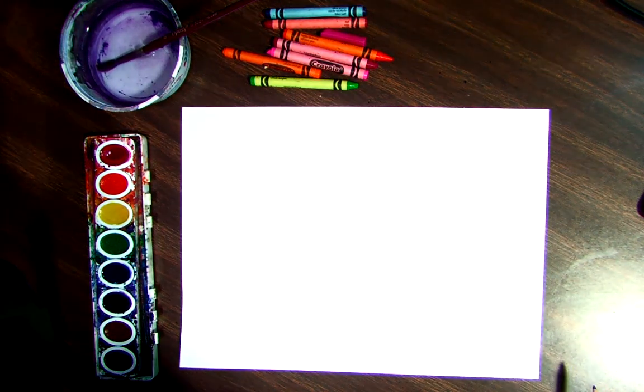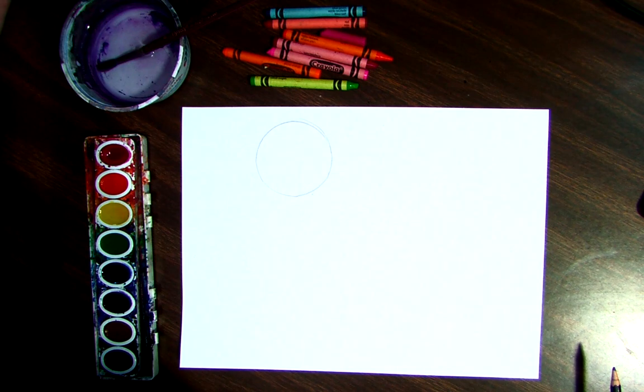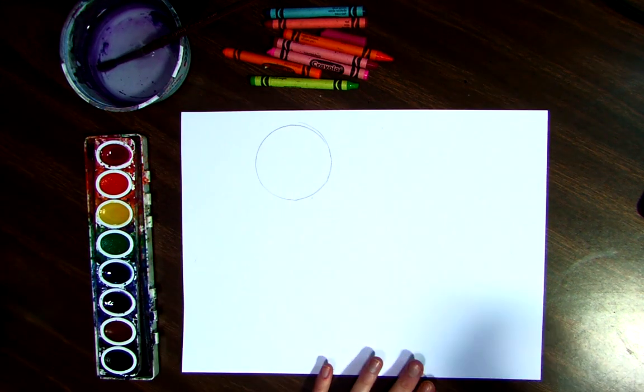There we go. So you can see my circle is not perfect by any means, and that's okay because we're going to be coloring it in. So there is the start to my picture, my circle.